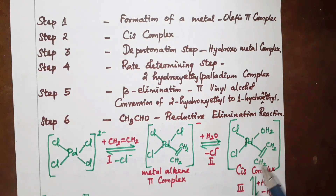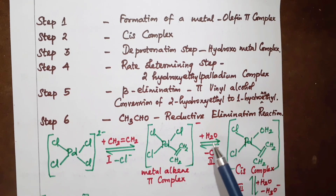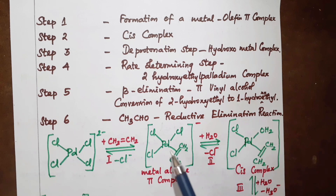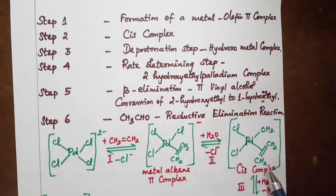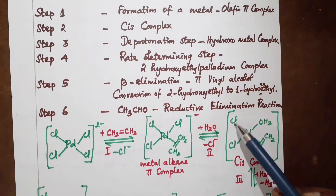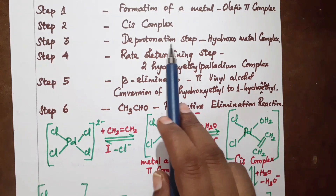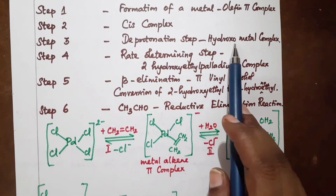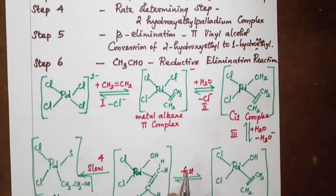Step 2: Formation of the cis complex. A water molecule is added — water substitutes the other chlorine ligand on palladium. This gives a cis aqua complex. Step 3 is the deprotonation step, forming a hydroxy-metal complex, also a cis complex.